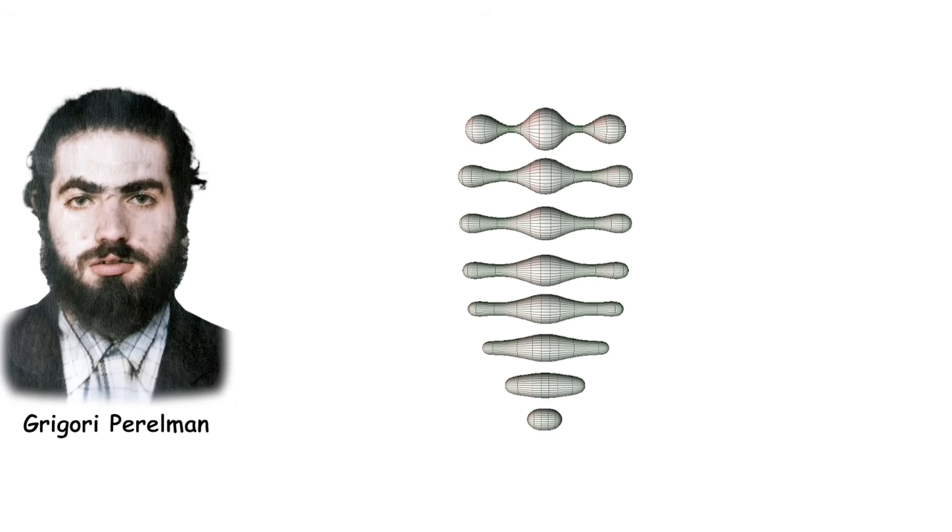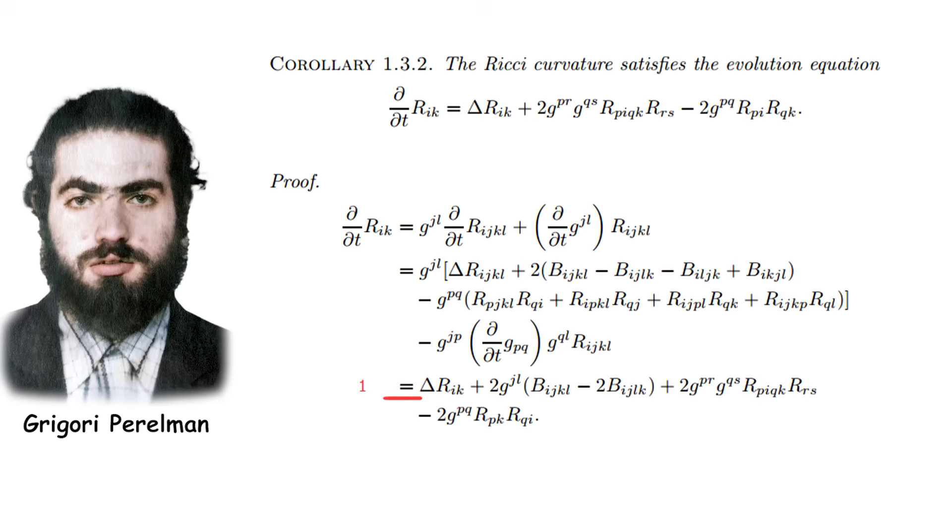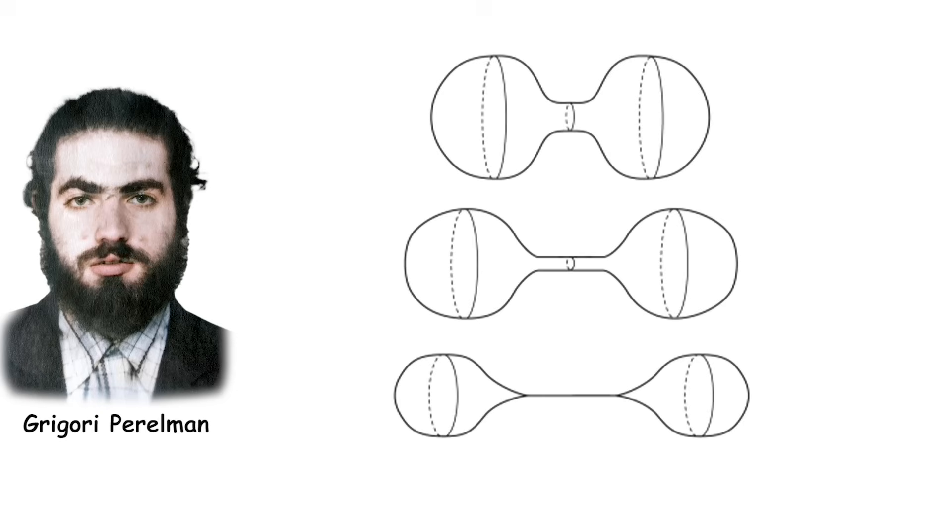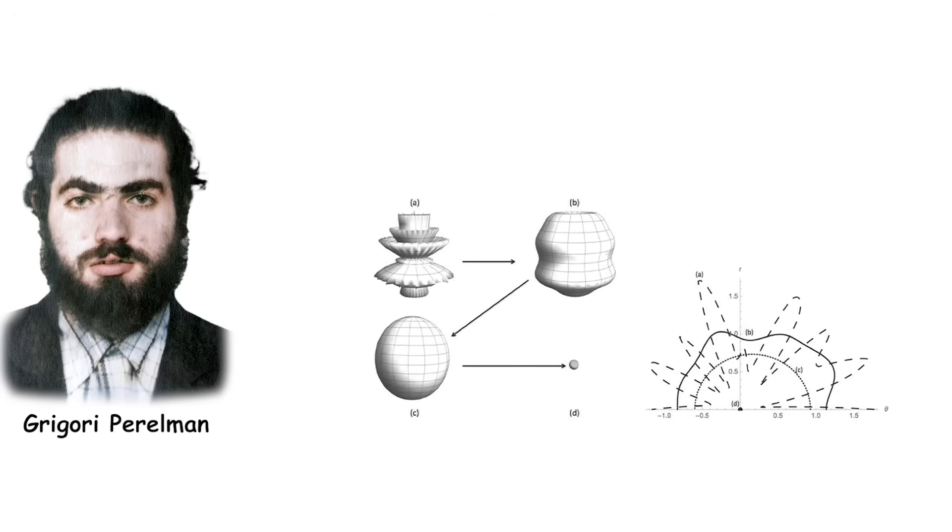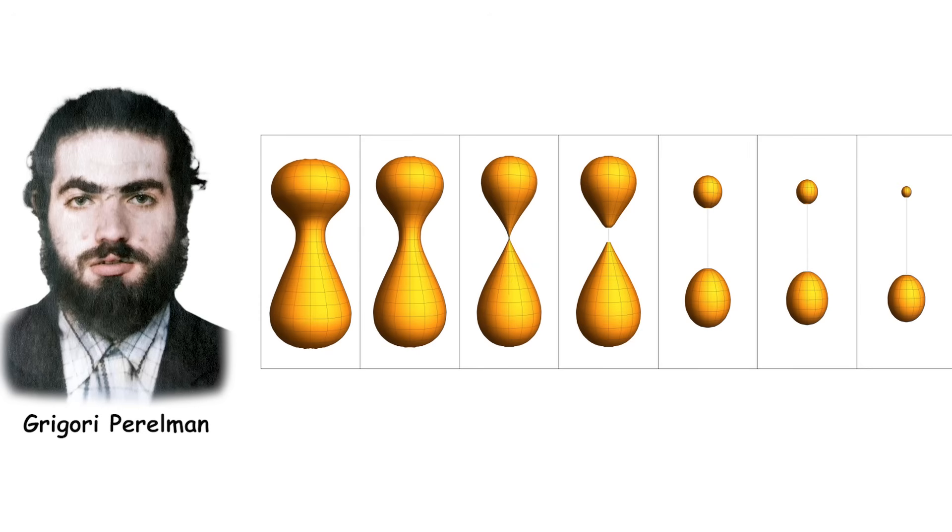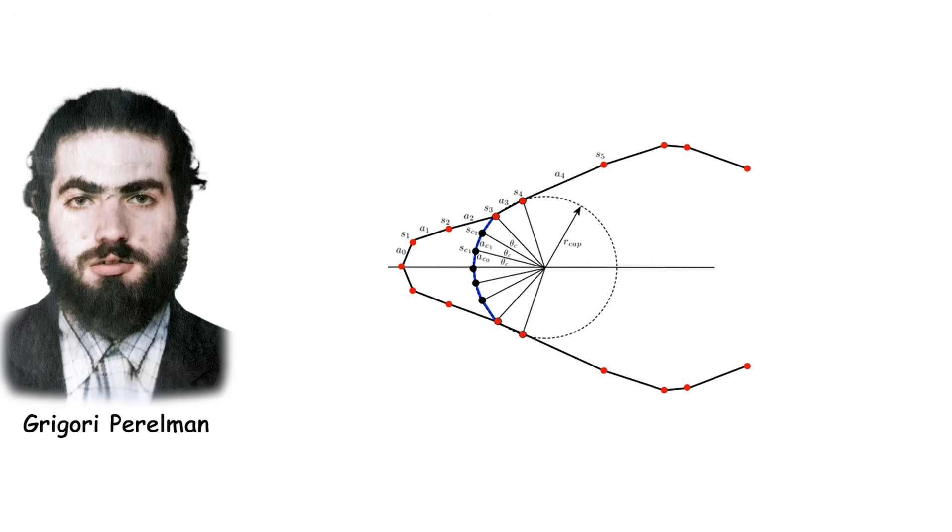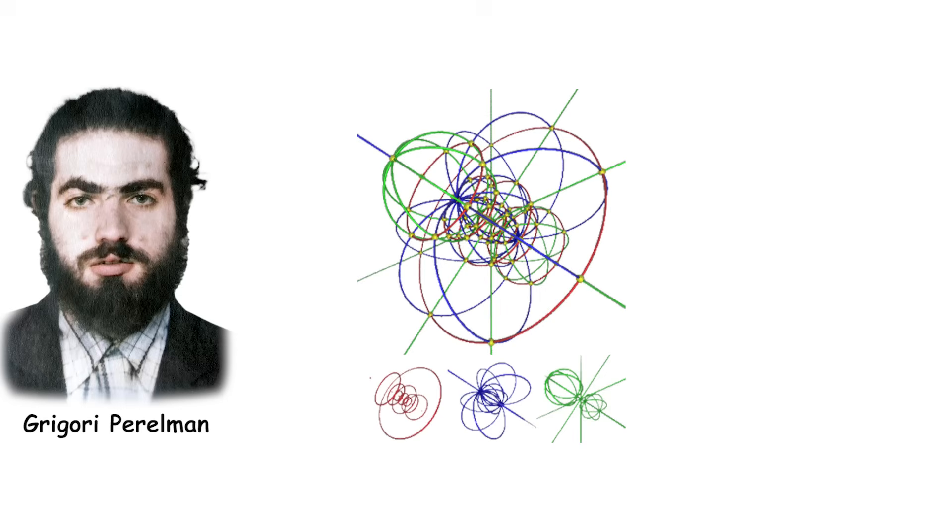The Ricci flow is a set of partial differential equations that deform the manifold in a certain way. It usually deforms manifolds into round structures, but can sometimes encounter singularities. To handle singularities, Perelman introduced Ricci flow with surgery, in which he manually removes the singular points and replaces them with smooth structures. Perelman's proof showed that every simply connected, closed three-dimensional manifold is homeomorphic to the three-sphere, proving the Poincaré Conjecture.